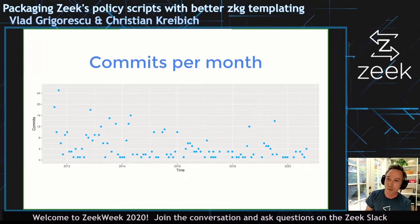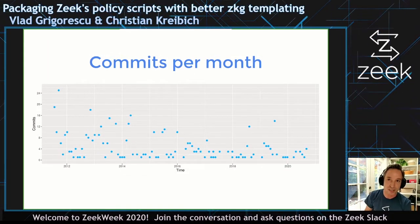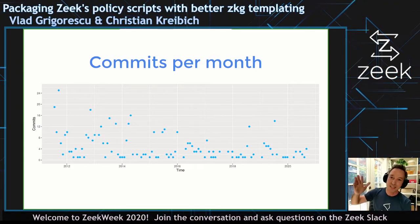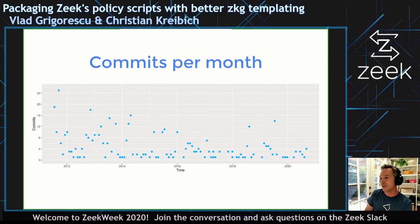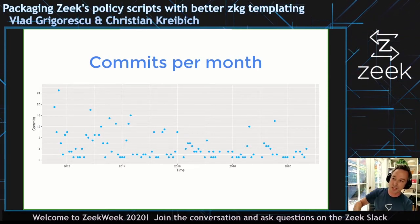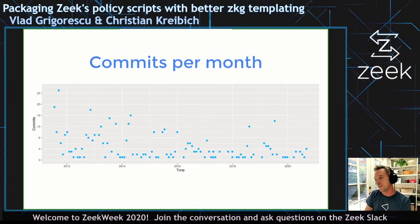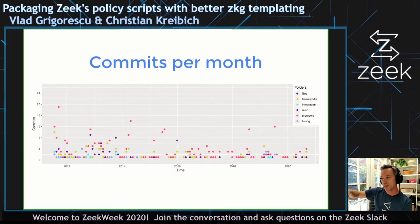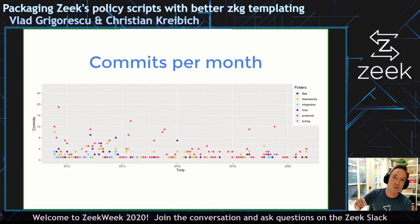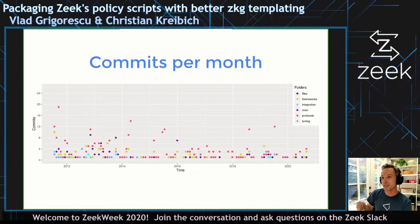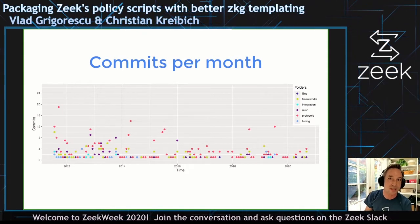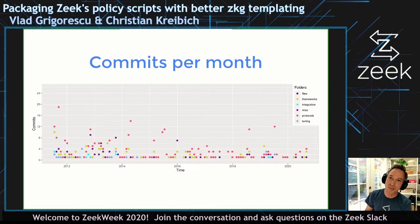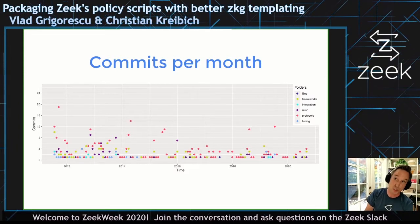We looked at how active that space is right now, because if there's a ton of churn, it's harder to make changes. The news there is pretty good — it has calmed down over the years. This is monthly commits into the policy folder over the last couple of years. Breaking it down by subdirectory, the updates are mostly in protocols right now, and most of the work lately is actually just modernization. Iteration on the actual features themselves is relatively little — so this too is good news.